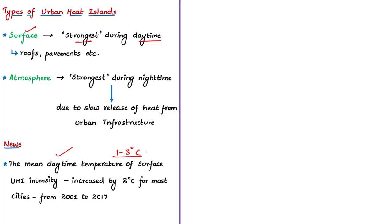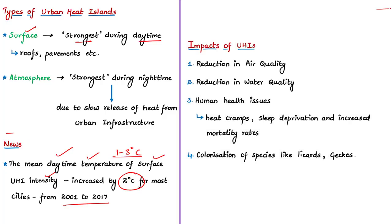After detailed research across all seasons in about 44 major cities from 2001 to 2017, it was found that the mean daytime temperature of surface urban heat island intensity goes up to 2 degrees Celsius for most cities. This trend has been confirmed by researchers in major cities such as Delhi, Mumbai, Bengaluru, Hyderabad, and Chennai. The study also listed impacts of urban heat islands, including a decrease in air quality.